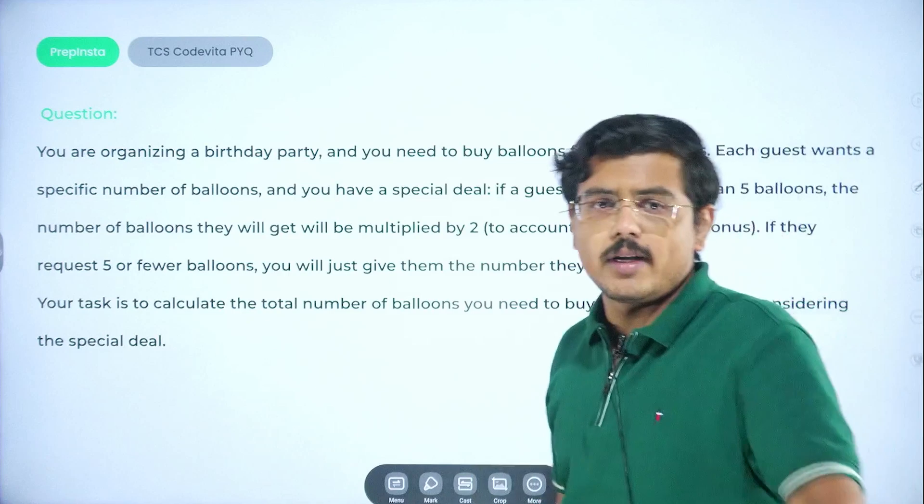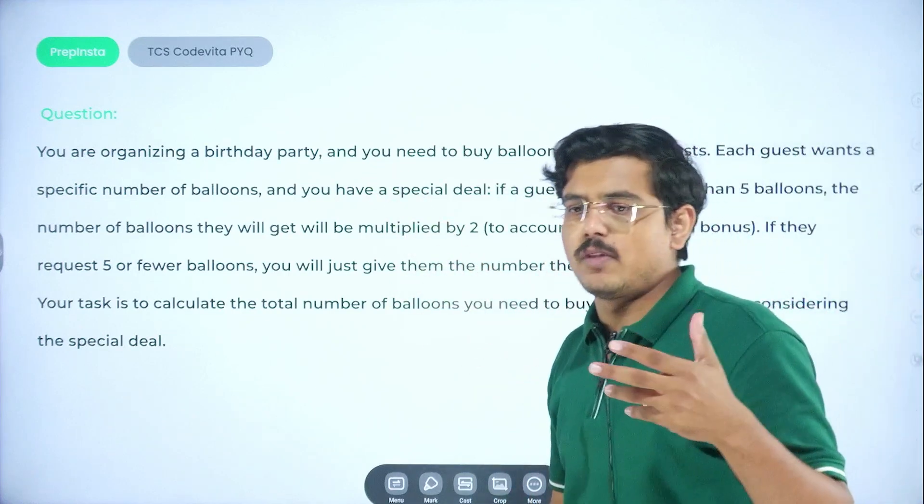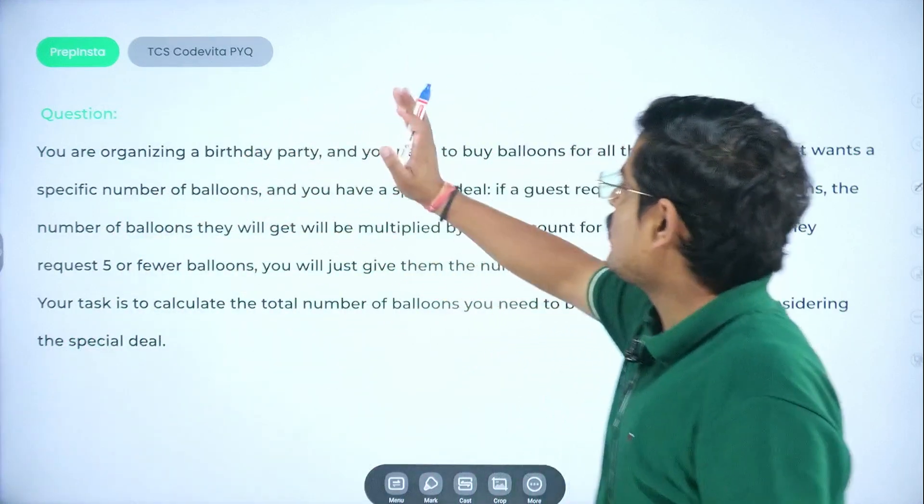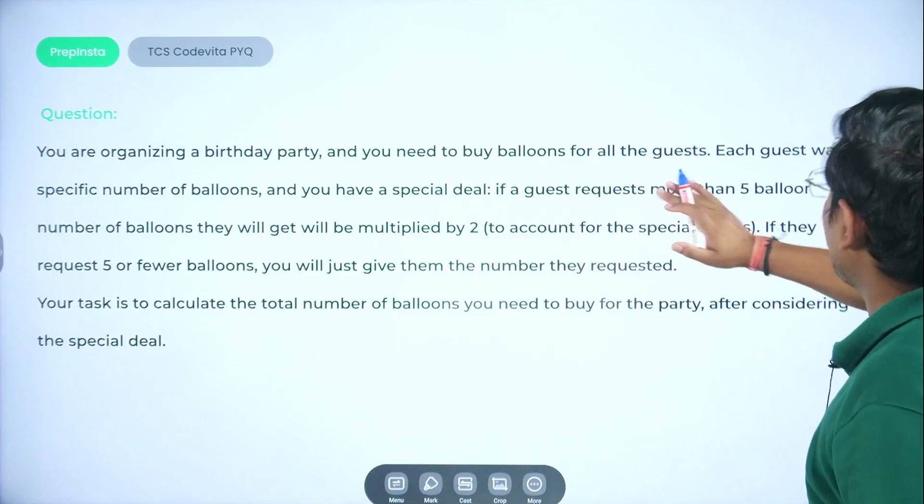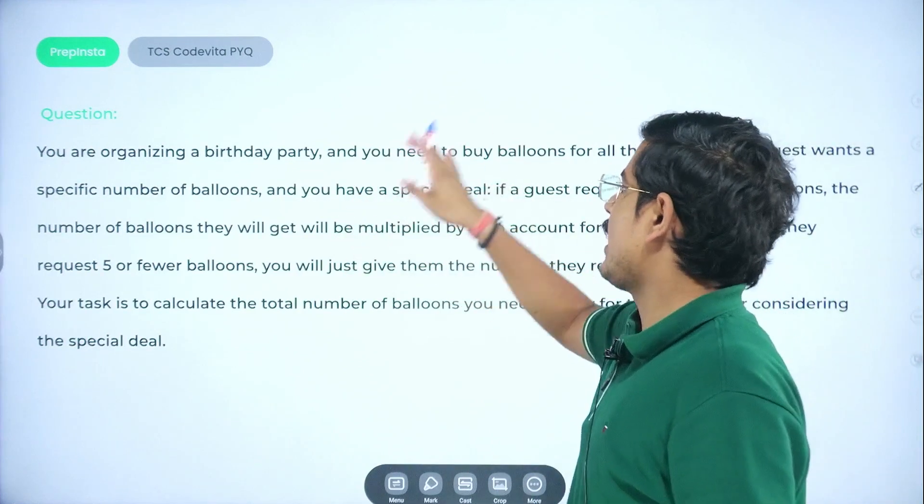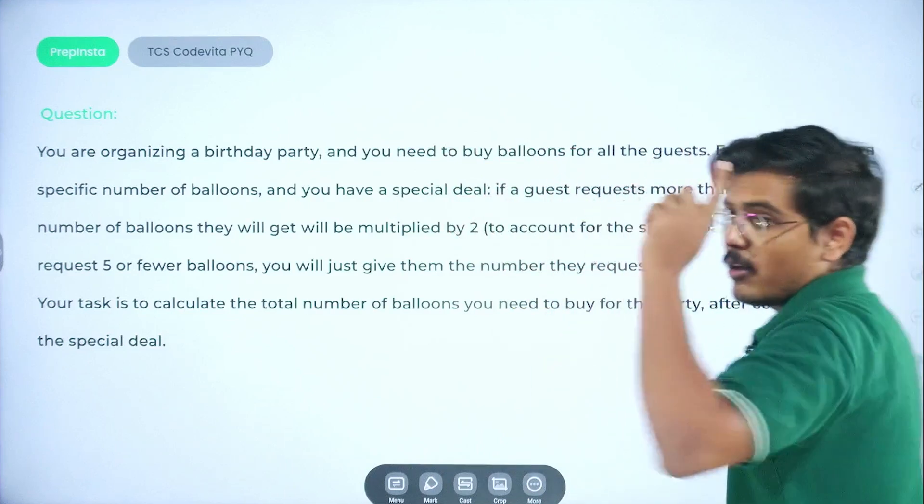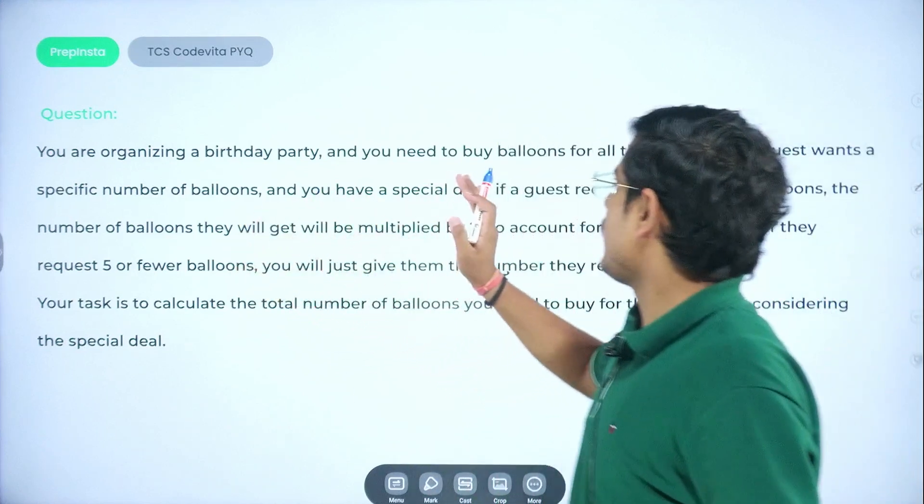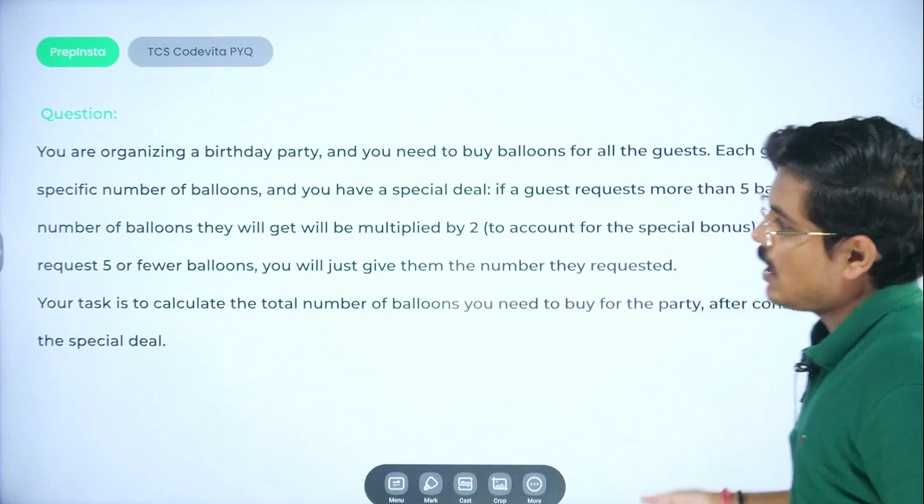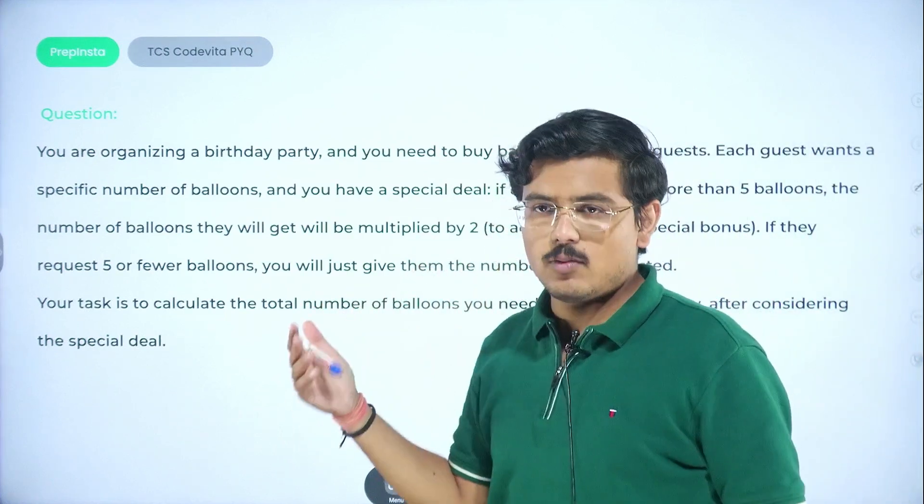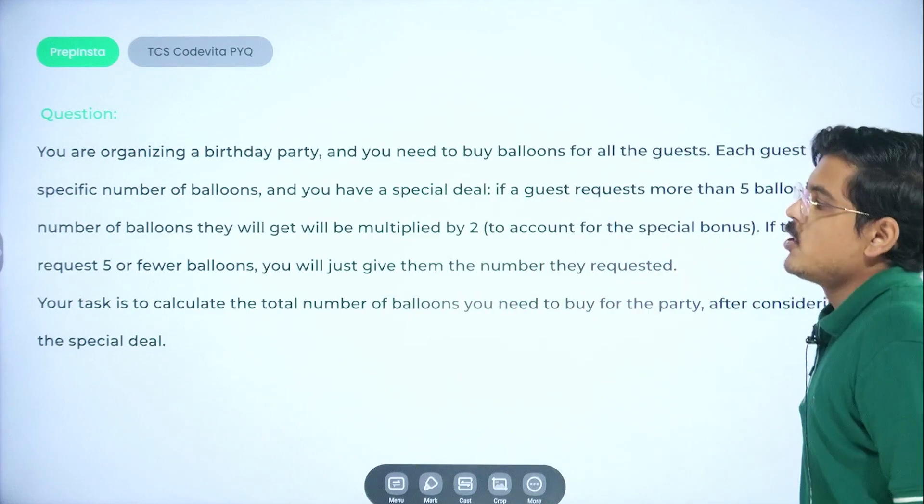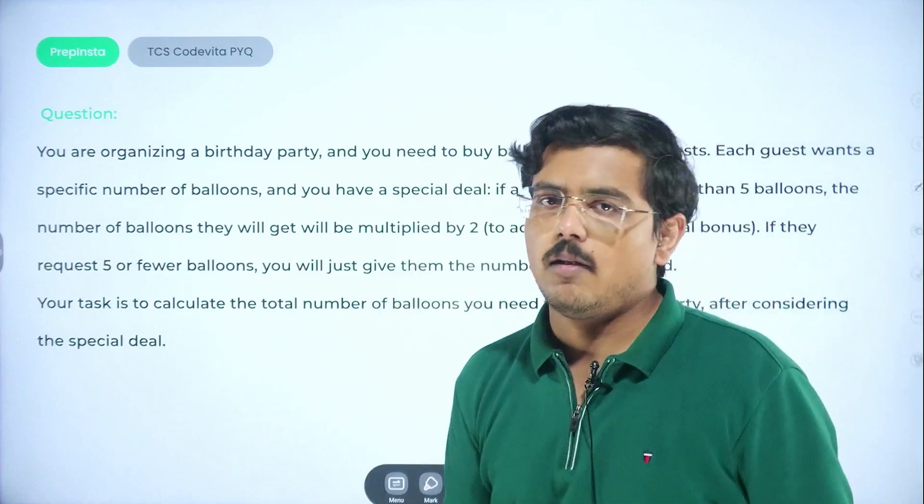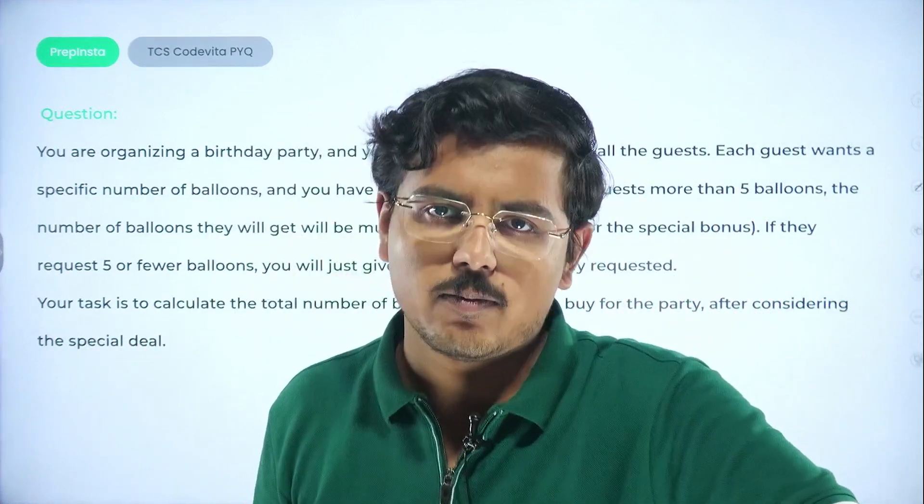Now, this is a homework question for you. It is a similar question in the next part 2 video of this. I would solve this out for you. The question is, you are organizing a birthday party and you need to buy balloons for all the guests. Each guest wants a specific number of balloons and you have a special deal. If a guest requests more than 5 balloons, the number of balloons they will get will be multiplied by 2 to account for the special bonus. If they request 5 or fewer balloons, you will just give them the number they requested. So your task is to calculate the total number of balloons you need to buy for the party after considering the special deal.